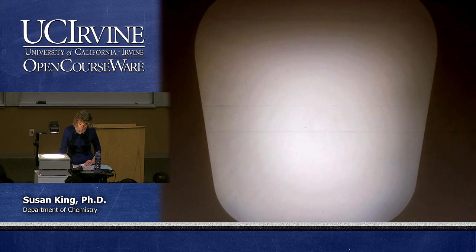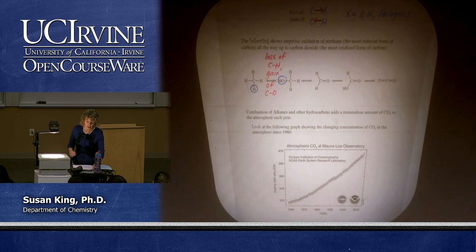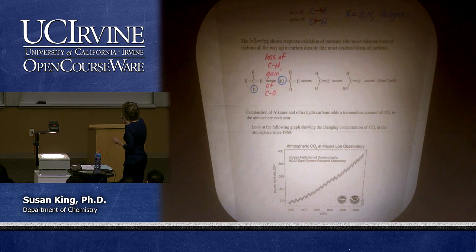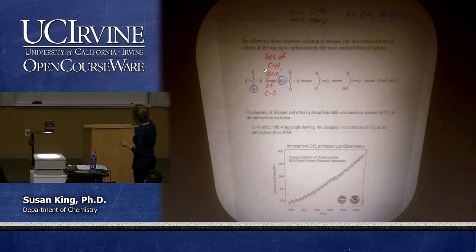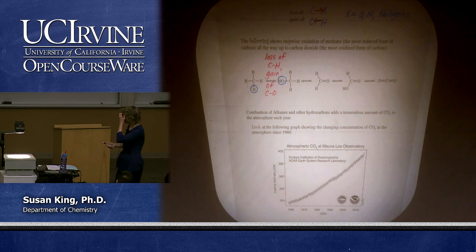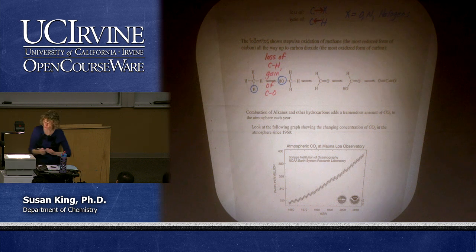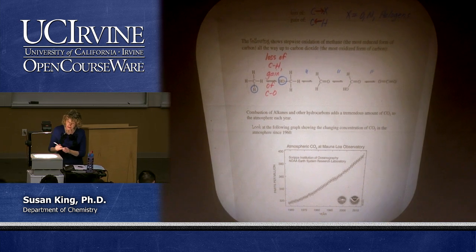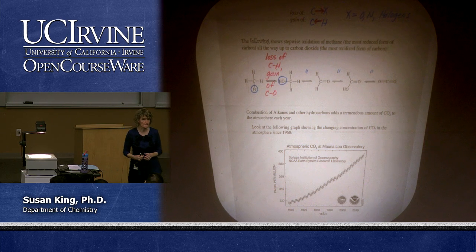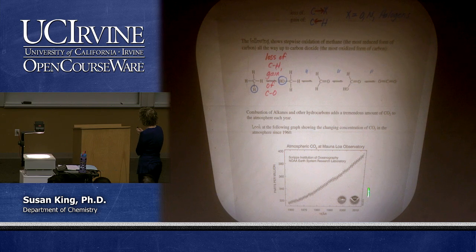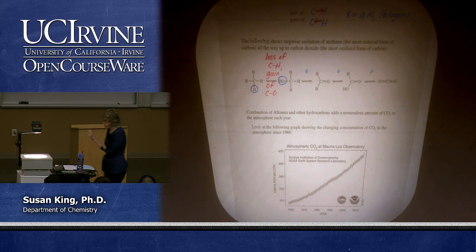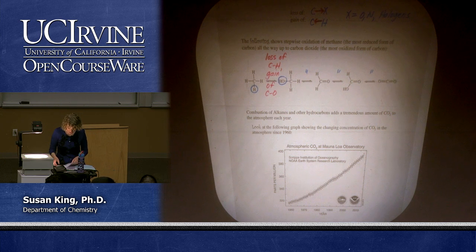We're talking about oxidation and reduction, which we'll come back to in chapter 12. With methane, every time we lose a carbon-hydrogen bond and gain a carbon-oxygen bond, we can take methane all the way to carbon dioxide. We rely heavily on this for heat and energy. Looking at the atmospheric CO2 graph from Mauna Loa Observatory, you can see CO2 rising — coming from oxidation of hydrocarbons.